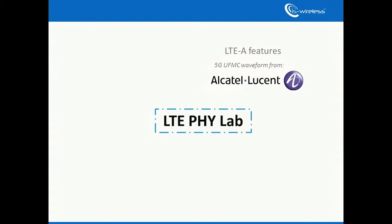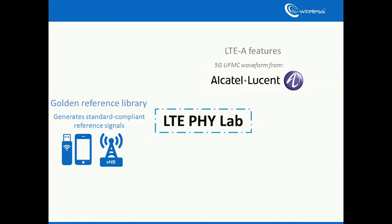Thanks to its capability to generate standard compliant reference signals, LTE File App can be used as a golden reference library providing reference signal vectors. It provides a comprehensive implementation of the E-UTRA physical layer according to 3GPP Release 8, with substantial elements of Release 9 and 10.